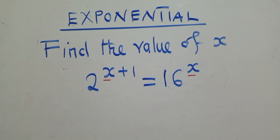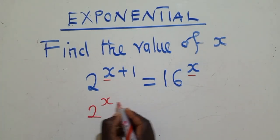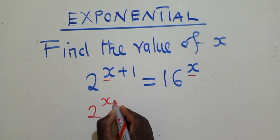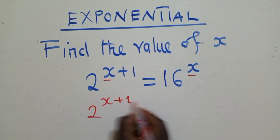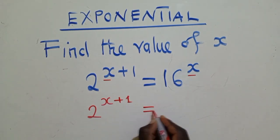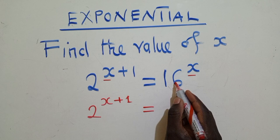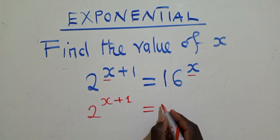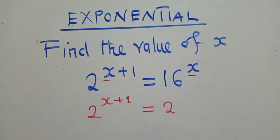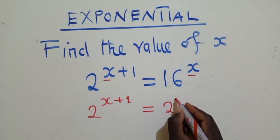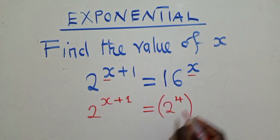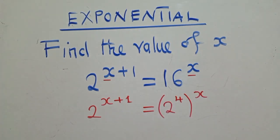So we're going to say 2 to the power x plus 1, which would be equal to this side. But we have to balance the base. Remember, I've got 2 here. So even this side, we shall have a 2 power 4 inside the brackets to the power x there.